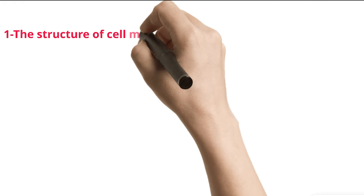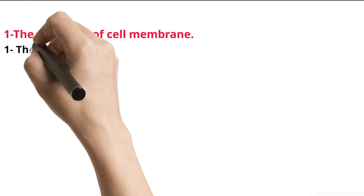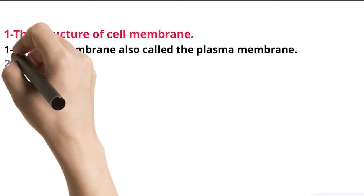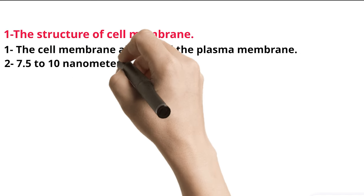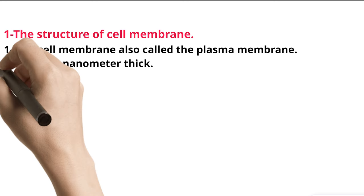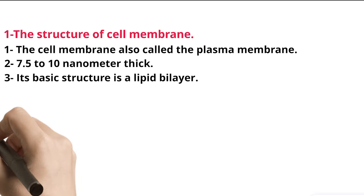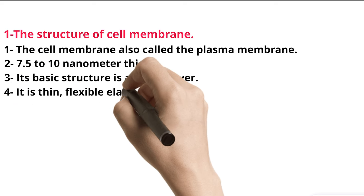The Structure of Cell Membrane. 1. The cell membrane also called the plasma membrane. 2. 7.5 to 10 nanometer thick. 3. Its basic structure is a lipid bilayer. 4. It is thin, flexible elastic structure.